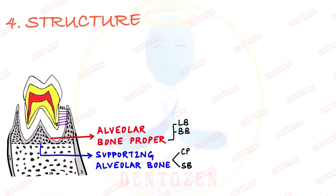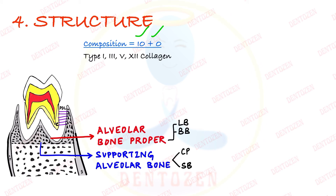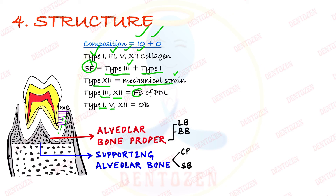The structure of alveolar bone is similar in composition to bone — it has both inorganic and organic components. The organic component is mainly collagen type 1, but also types 3, 5, and 12. Sharpey's fibers in the bone contain type 3 collagen along with type 1, and type 12 is expressed when there is mechanical strain over the bone. Types 3 and 12 are expressed by fibroblast cells of the periodontal ligament, whereas types 1, 5, and 12 are expressed by osteoblast cells of the bone.